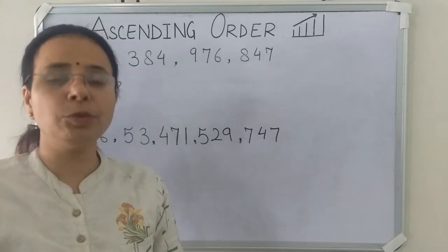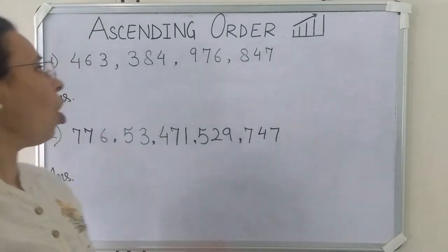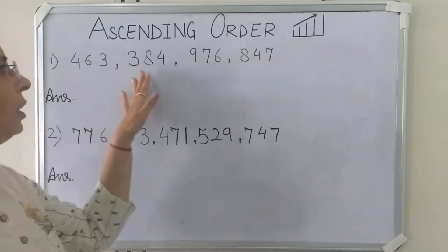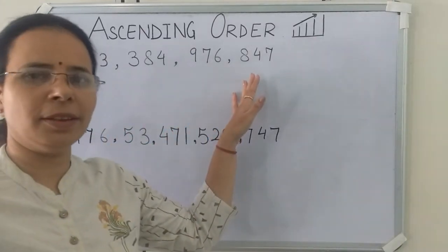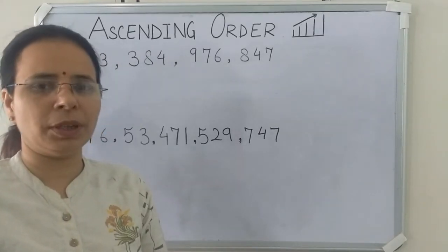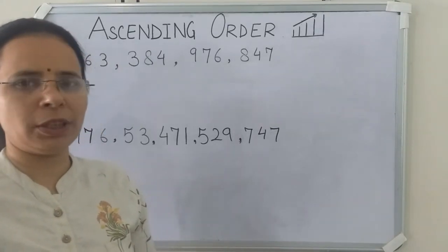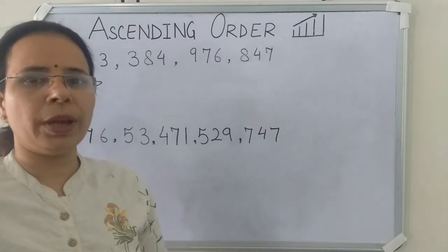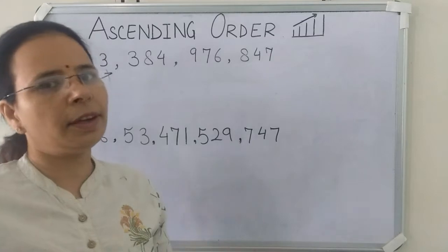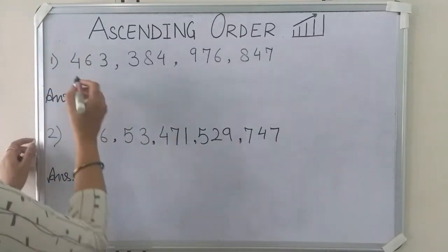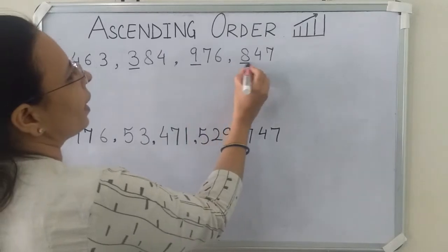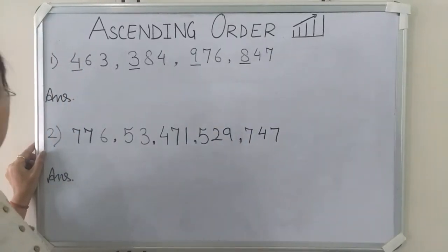First we have to make sure that all the numbers are 3 digits. Yes, you can see all the numbers are 3 digits. So first we have to find the smallest number. To find the smallest number we will compare the hundreds place. So first we will underline the hundreds place number. The hundreds place digits are: 4, 3, 9, and 8.